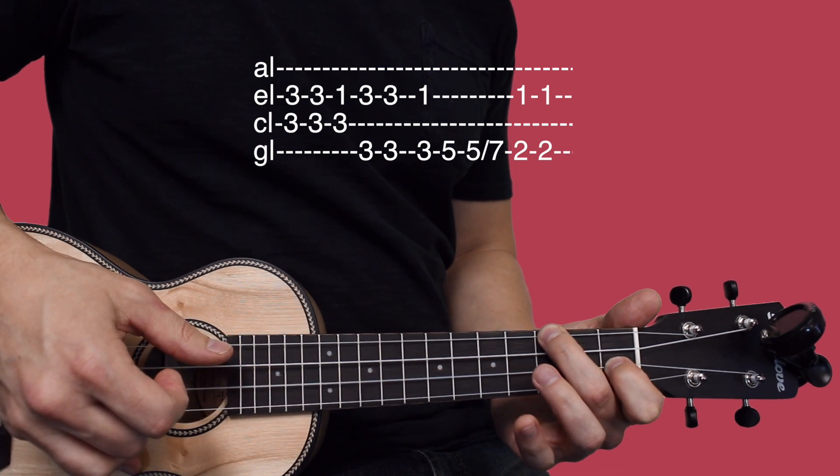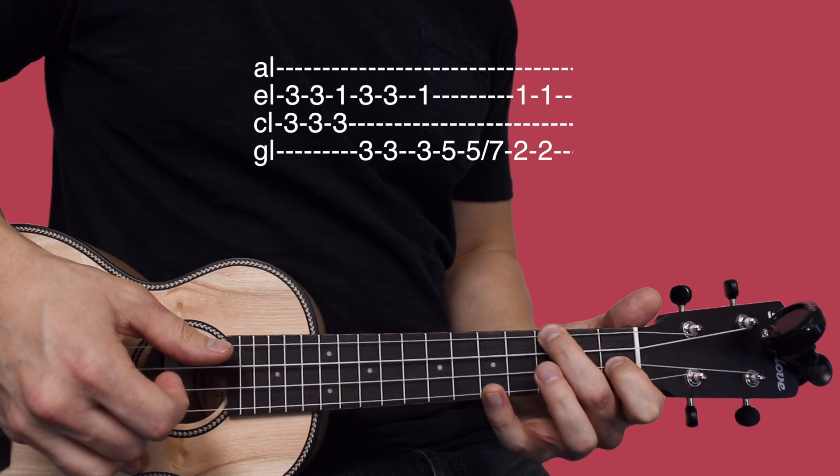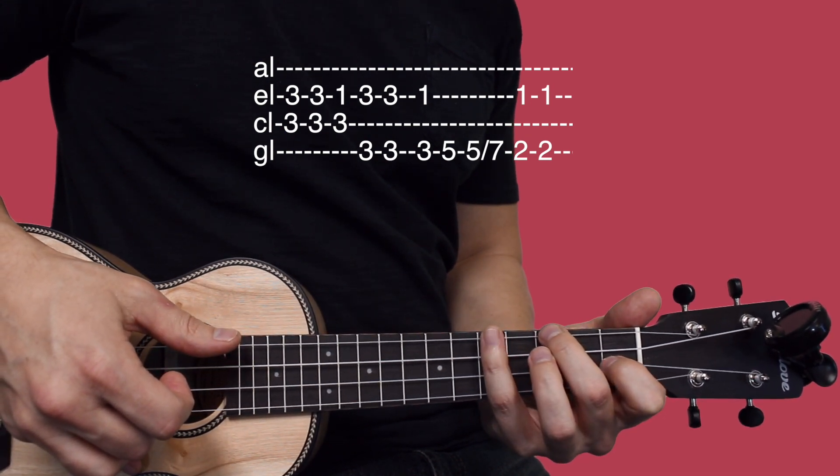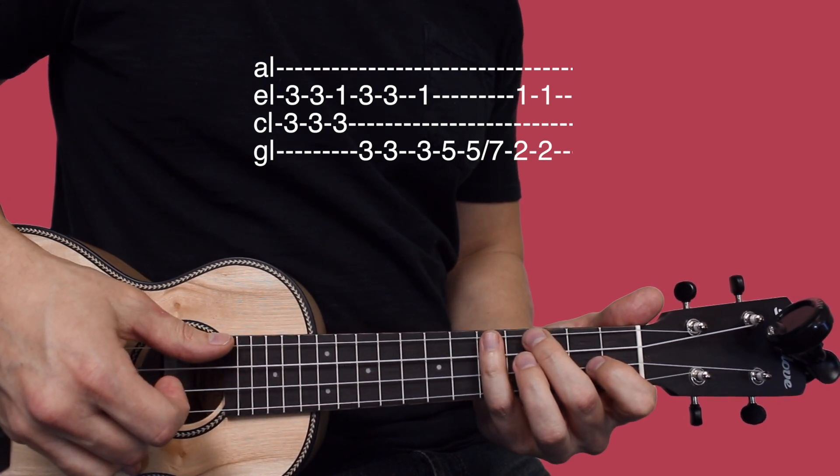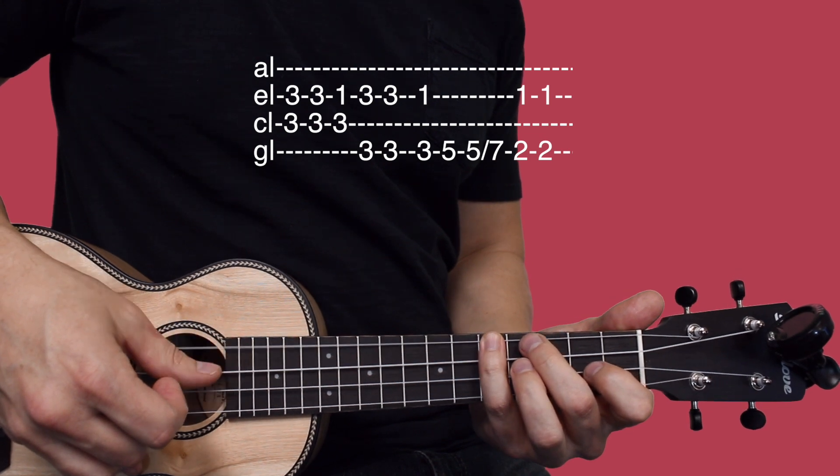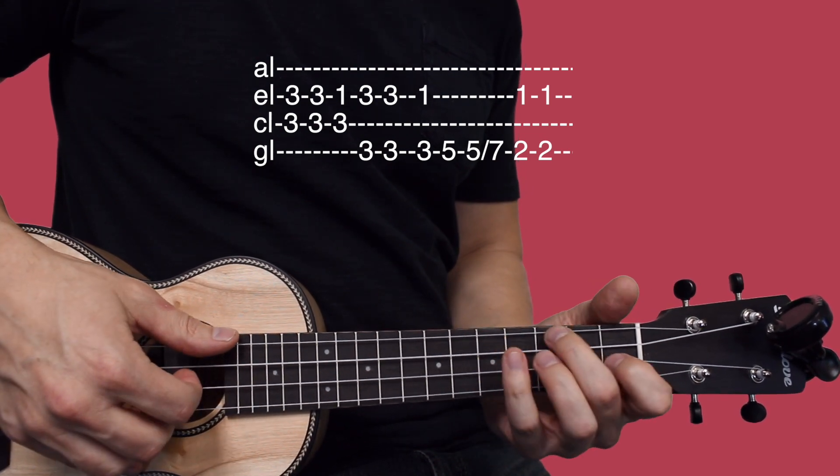So you're going to pluck those, then set your pinky down on the fifth fret of the fourth string. Pluck that singularly, then you're going to pluck again and slide up to seven.